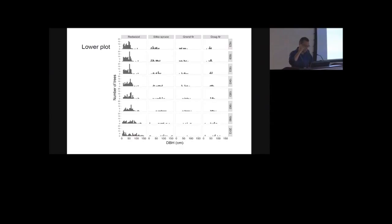In the upper plot, you see a pretty similar trend in redwood, although it's not as right skewed by the end of the time period as in the lower plot. There are a lot more grand fir in the upper plot, but they're also starting to die out. And if you're in the plot, you can really see that a lot of them are on their last legs. It seems like they won't last too much longer.